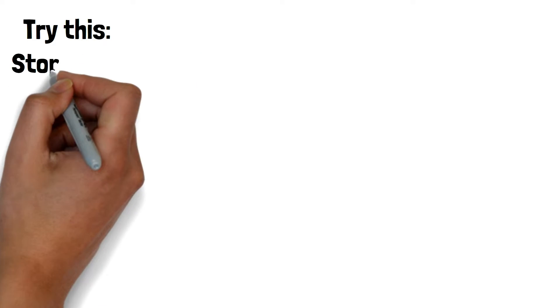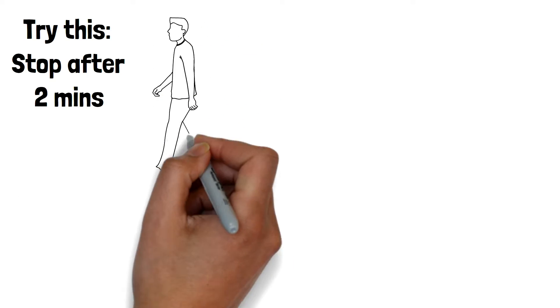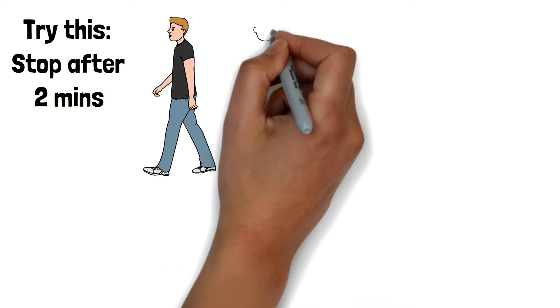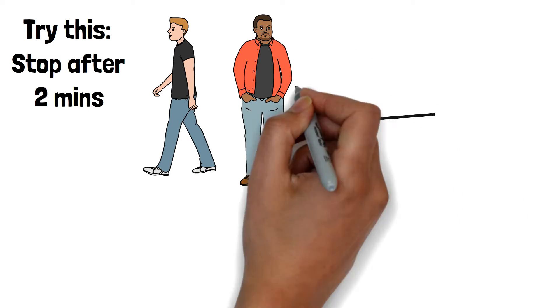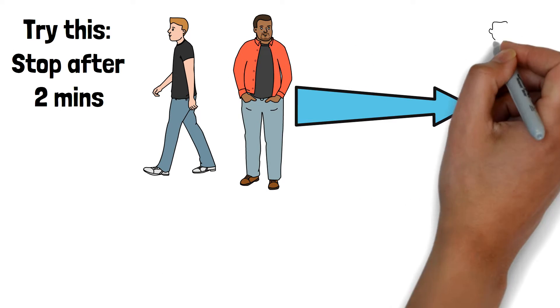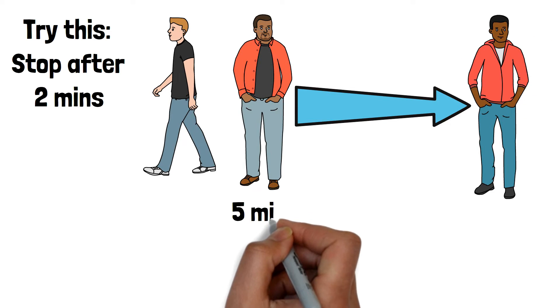If the two minute rule feels forced to you, try this: do it for two minutes and then stop. Go for a run but stop after two minutes. Start meditating but stop after two minutes. One fellow used this strategy to lose over 100 pounds.